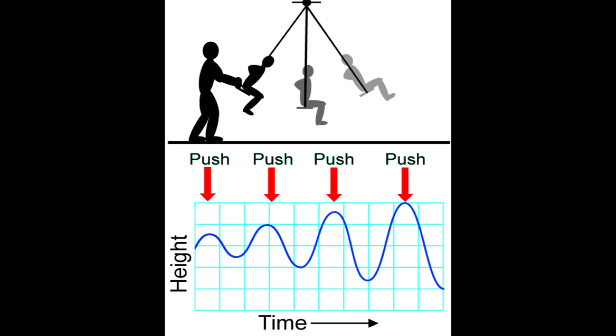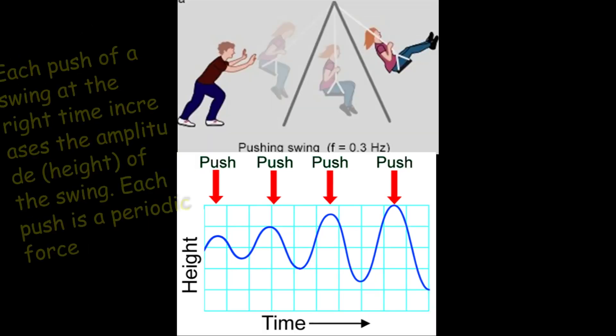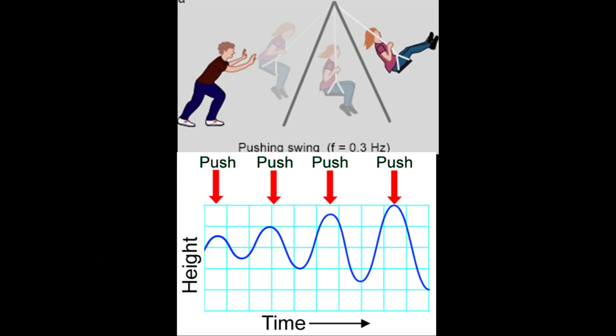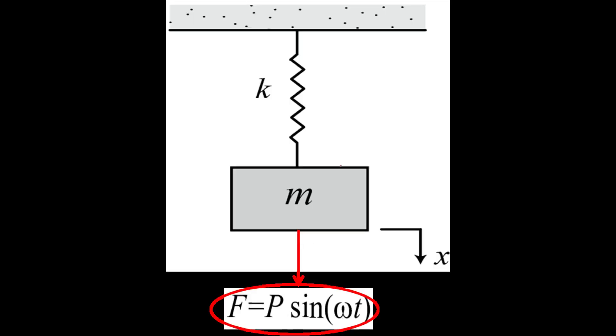The push or force that is repeated over and over at equal intervals of time is called the excitation frequency of the force. In order to supply energy to a vibrating system, you need to use a periodic force. This understanding can be mathematically represented as F equals P sin omega t, as shown here.